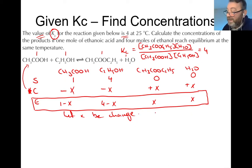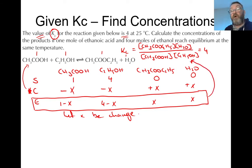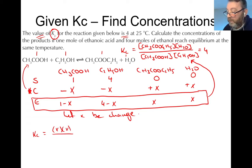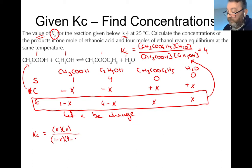Now take those equilibrium values and put them back into the equilibrium expression to form an equation in X. We get: Kc equals the concentration of ester (X) multiplied by the concentration of water (X), over the concentration of acid (1 minus X) multiplied by the concentration of alcohol (4 minus X).